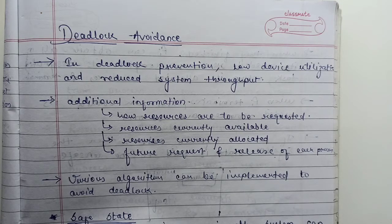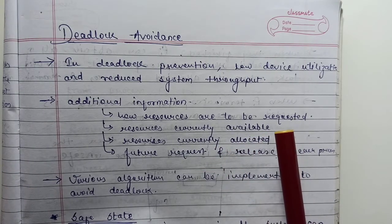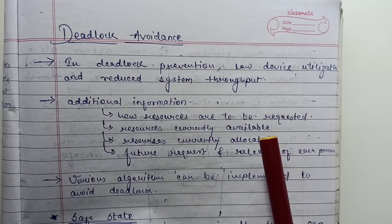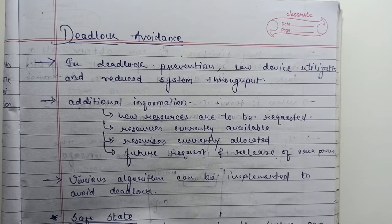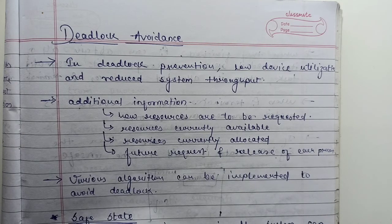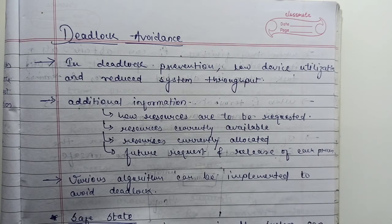Given this prior information, it is possible to construct an algorithm that ensures the system will never enter a deadlock state — this defines the deadlock avoidance approach. This algorithm dynamically examines the resource allocation state to ensure that a circular wait condition can never exist. We will see two deadlock avoidance algorithms. The first algorithm checks whether the system is in a safe state or unsafe state to avoid deadlock.